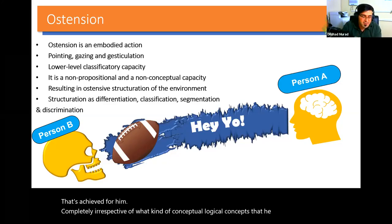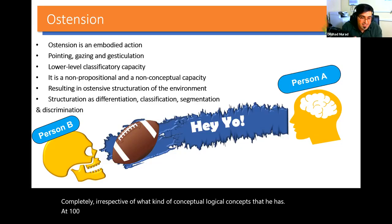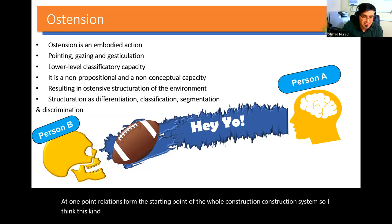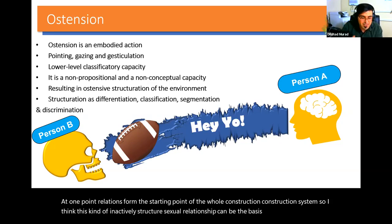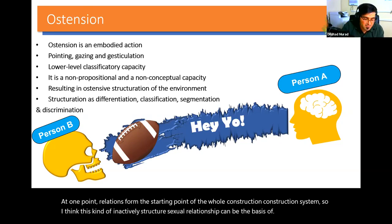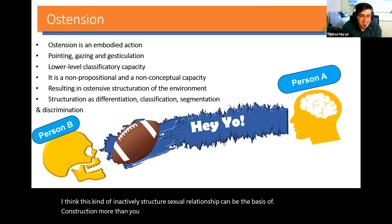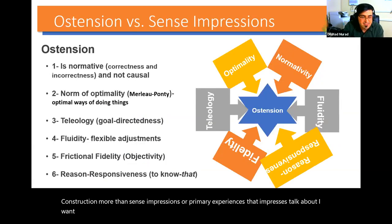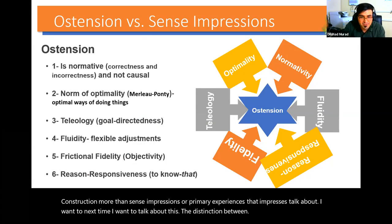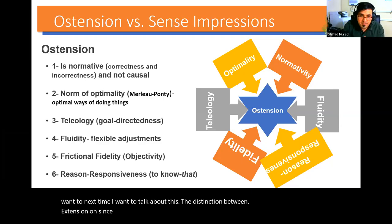Carnap says at one point that relations form the starting point of the whole constructional system. I think this kind of enactive structural relationship can be the basis of construction more than sense impressions or primary experiences that empiricists talk about. In the next slide I want to talk about the distinction between ostension and sense impressions.